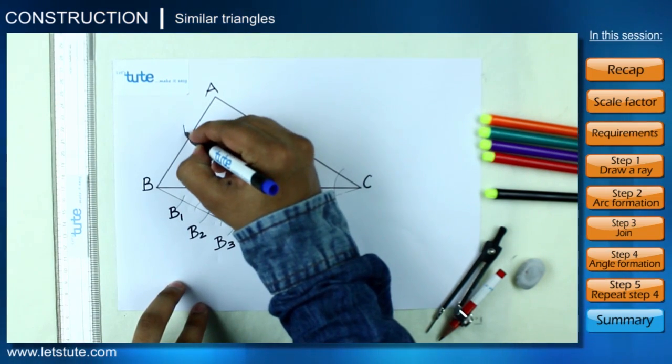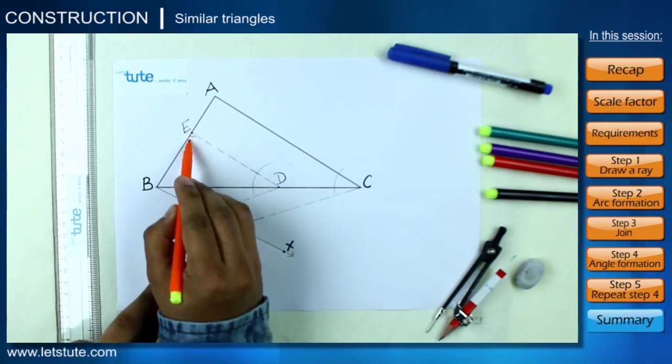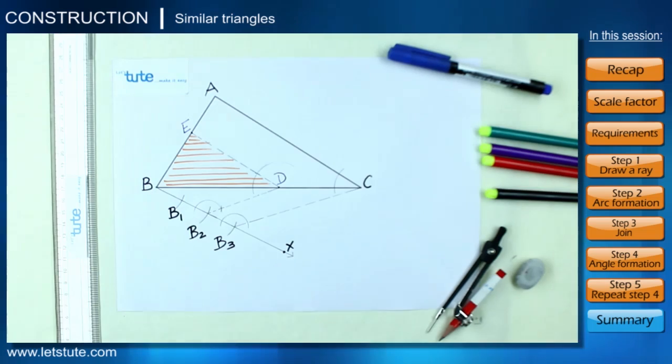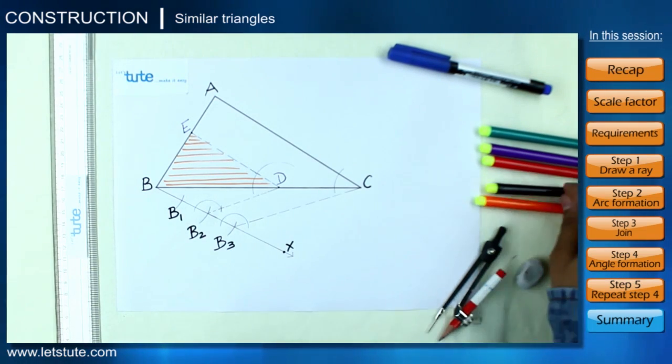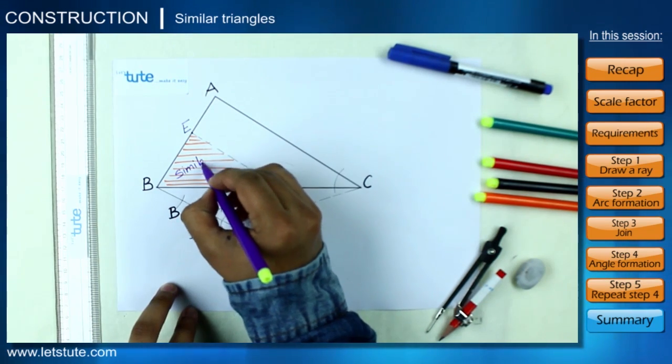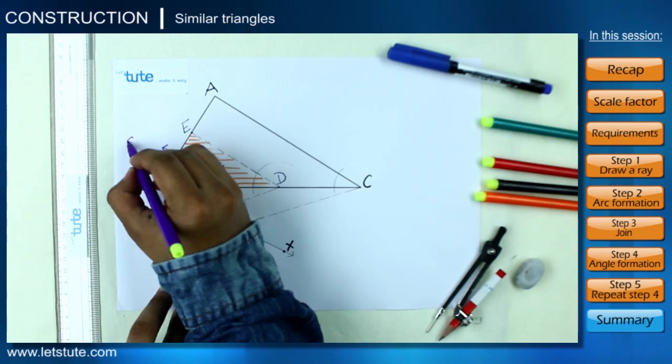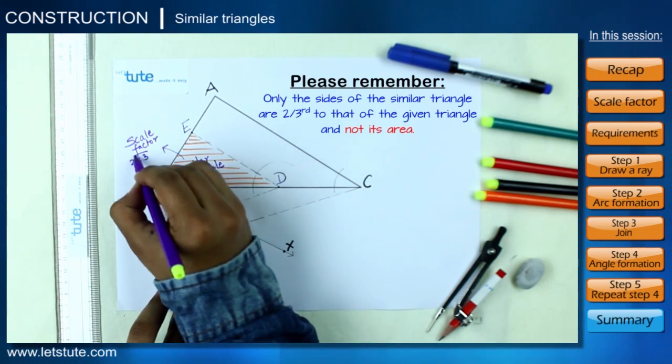Can you notice this smaller triangle EBD within the given triangle ABC? This is the similar triangle that we were trying to obtain with the given scale factor of 2 is to 3.